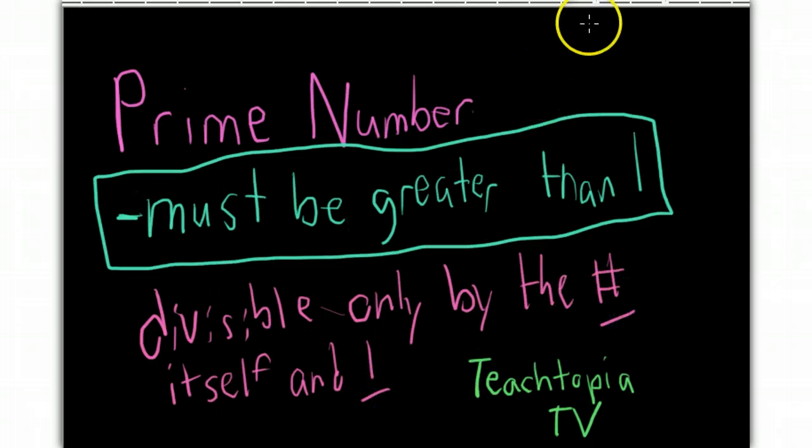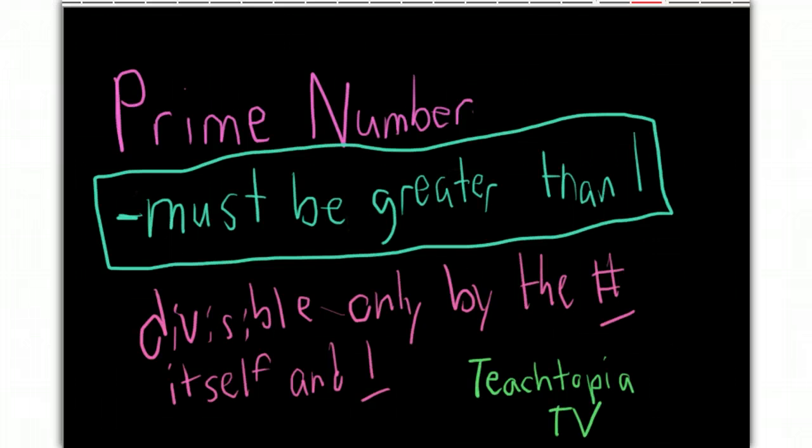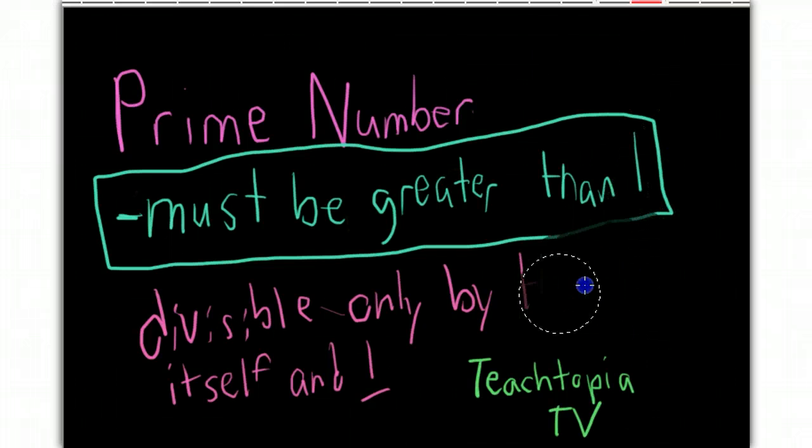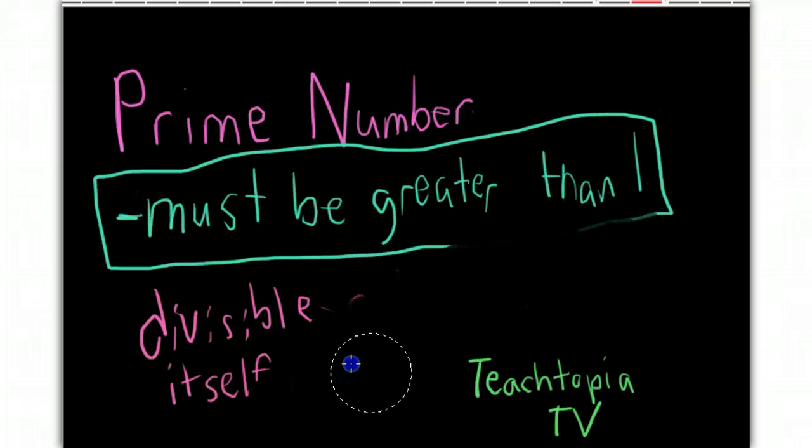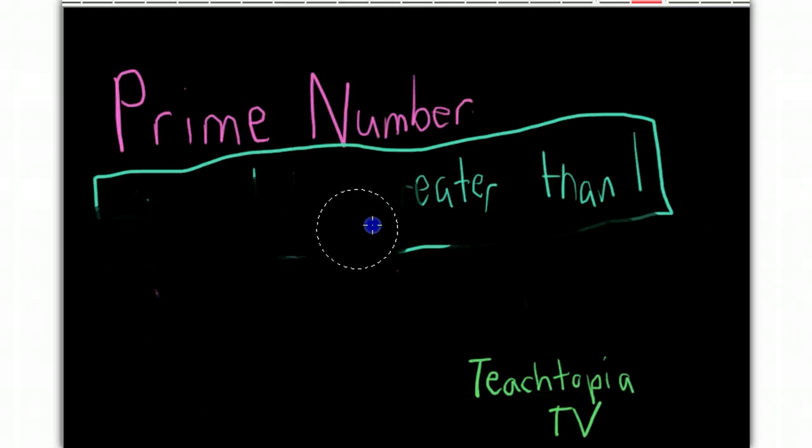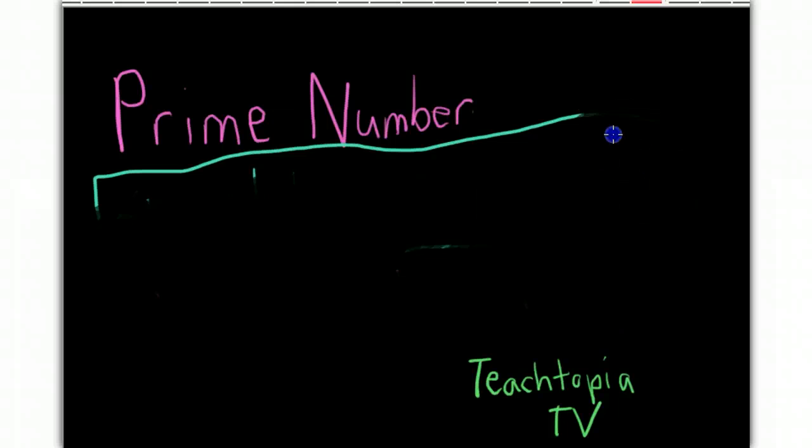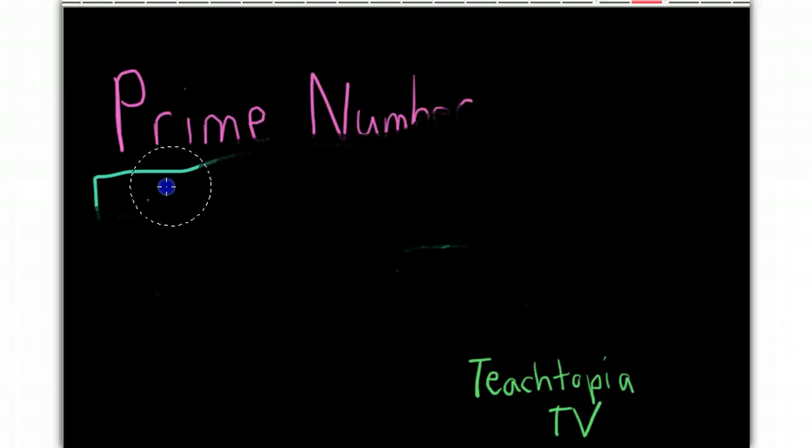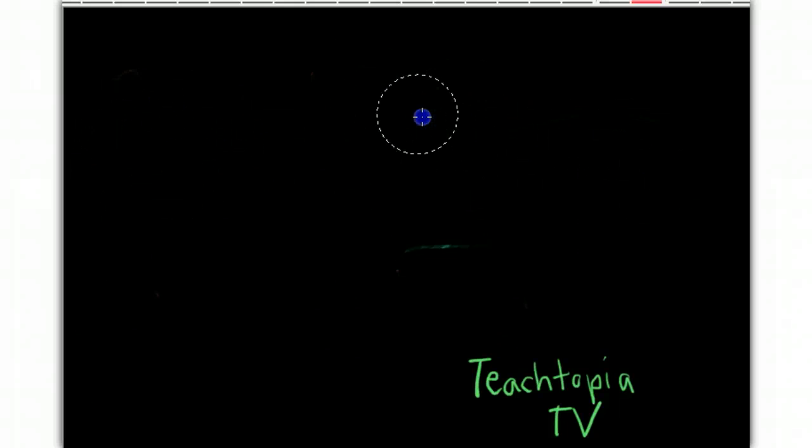So for example, let's do several examples here to really make sure you understand what a prime number is. Let's think of the number five. Five is one of the classic prime numbers. So here I go and I'll write five.